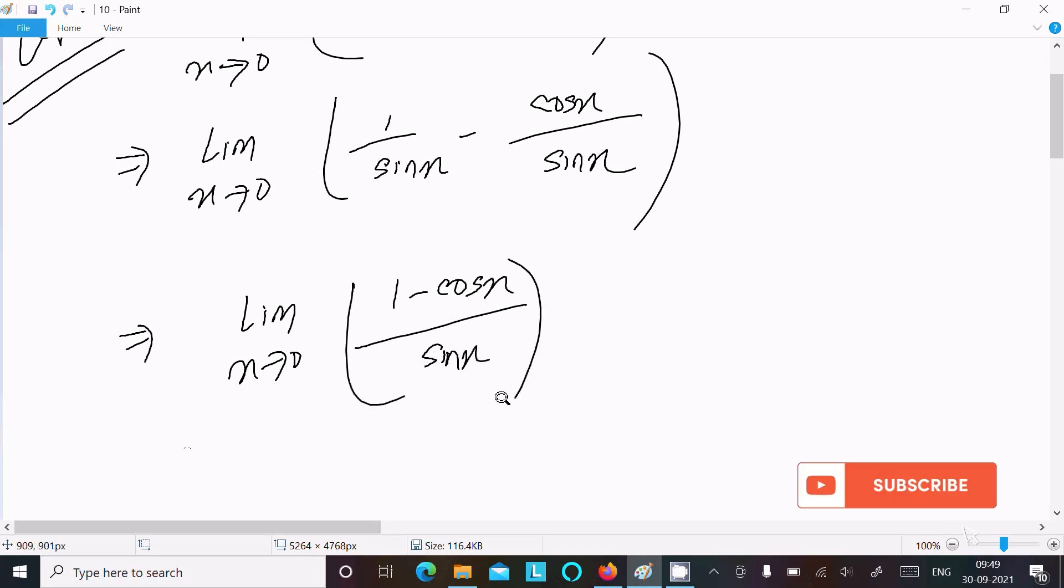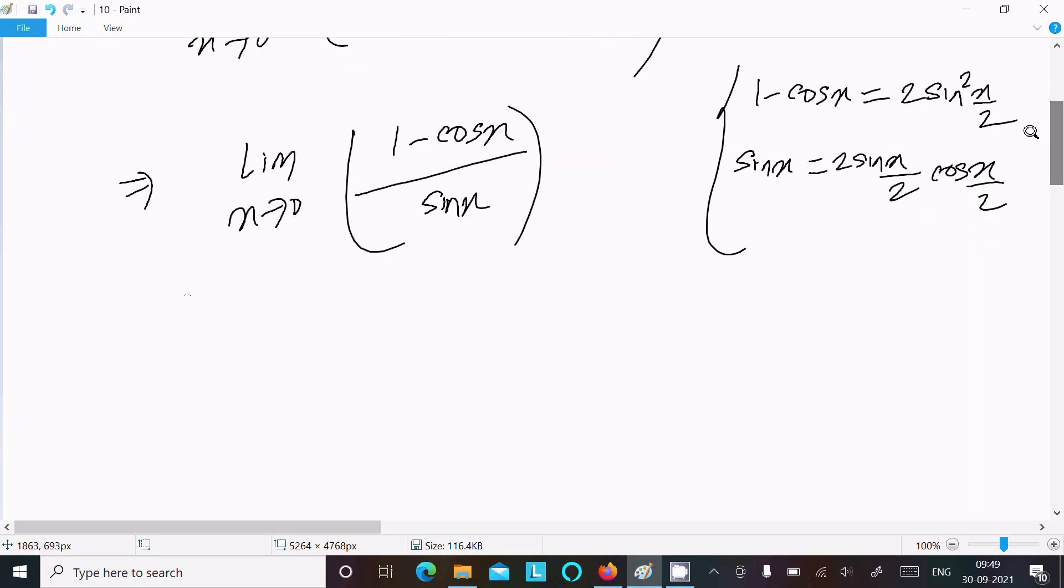Now we need to use two formulas: 1 minus cos x equals 2 sin square (x by 2), and sin x equals 2 sin(x/2) times cos(x/2). So use these two formulas.